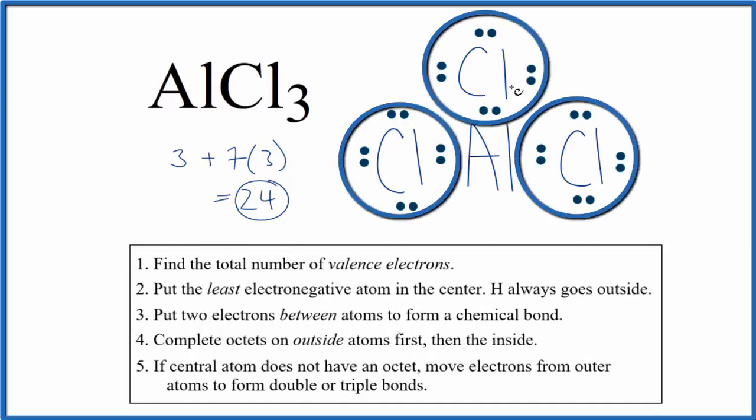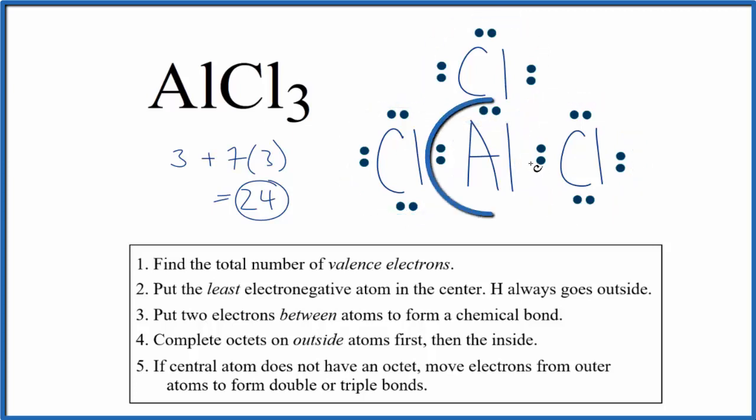Each chlorine has an octet. The aluminum in the center only has six valence electrons. But aluminum is an exception to the octet rule. It only needs six valence electrons. So this is the correct Lewis structure for AlCl3, aluminum tri-chloride.